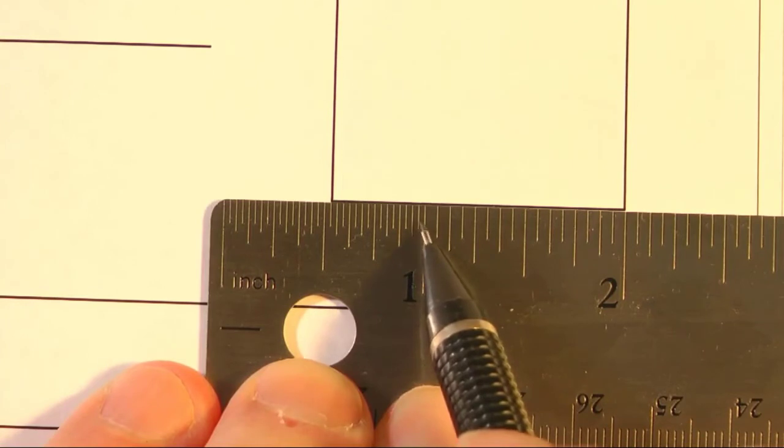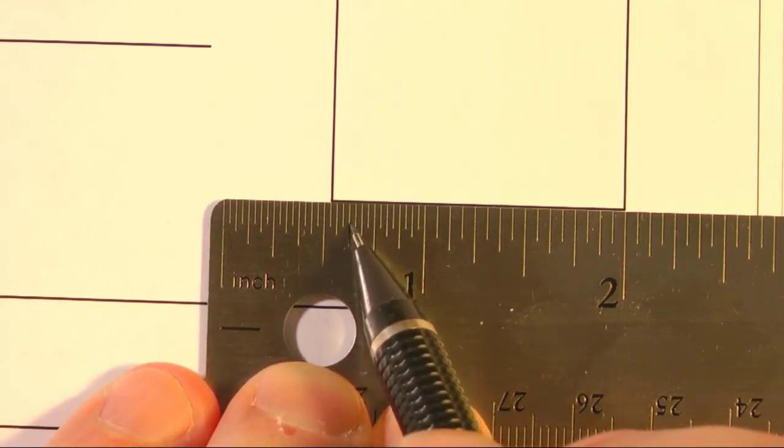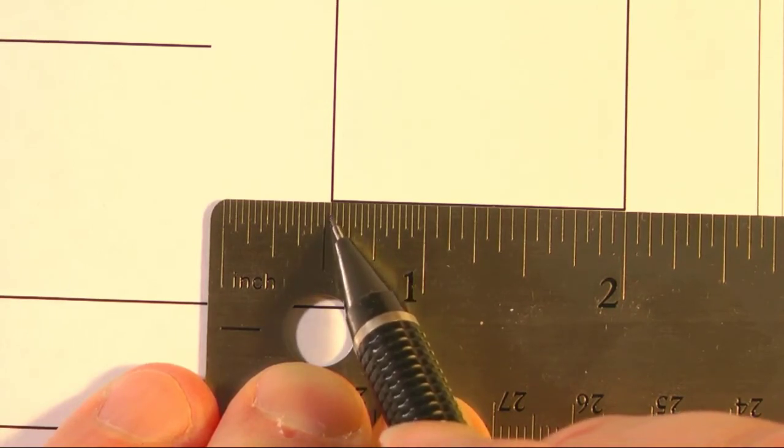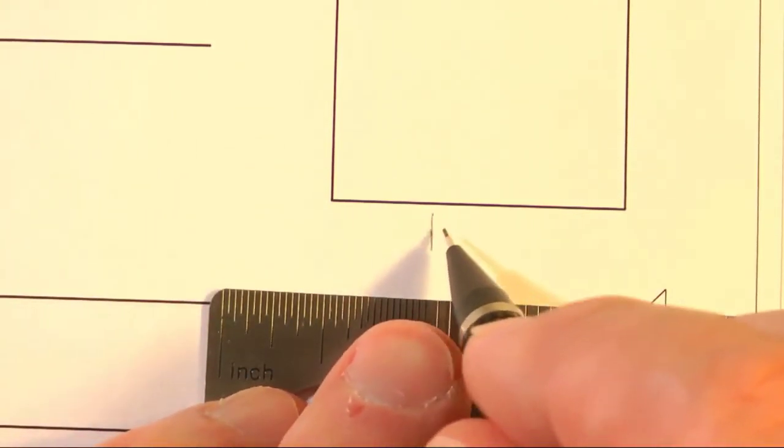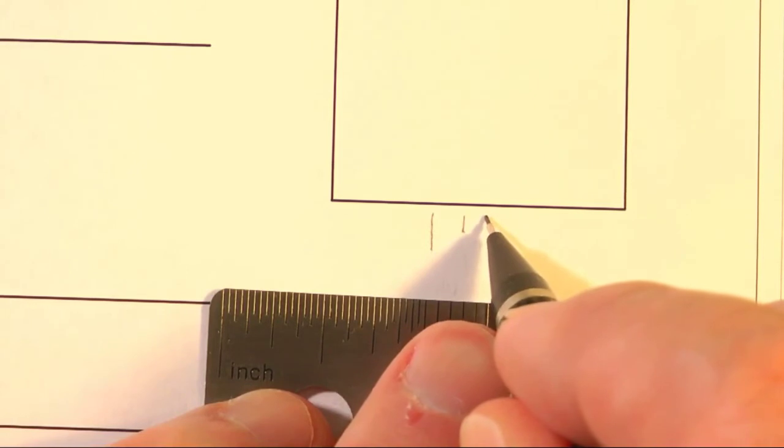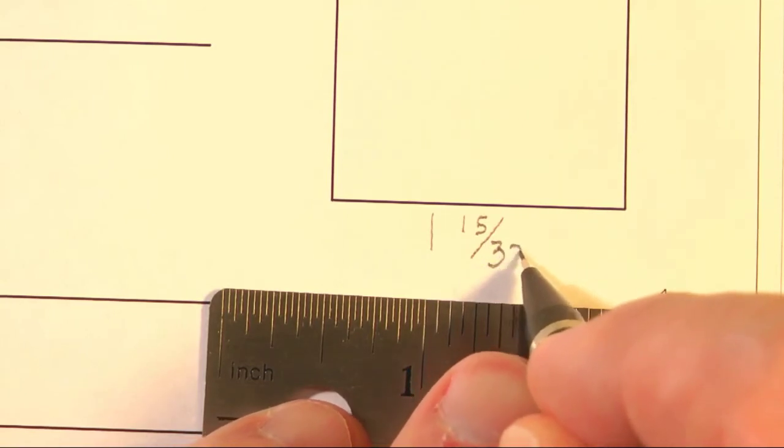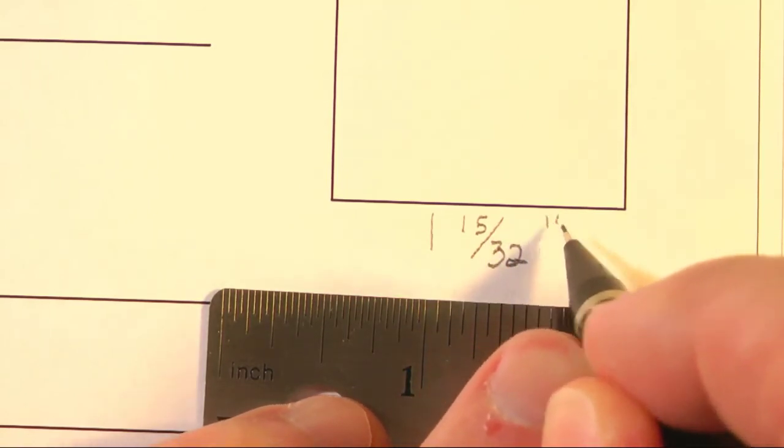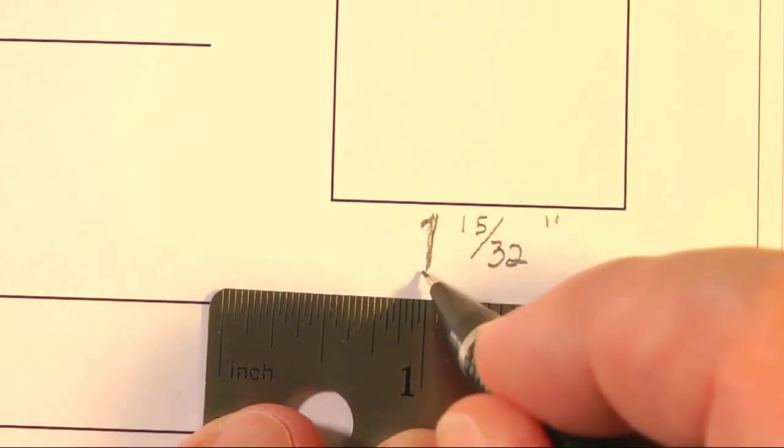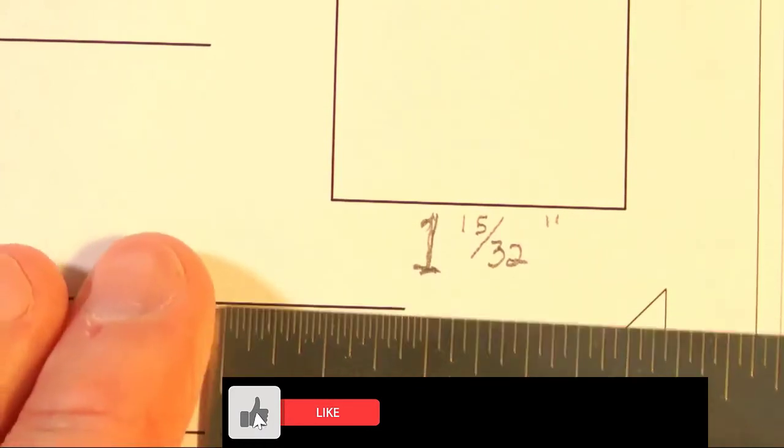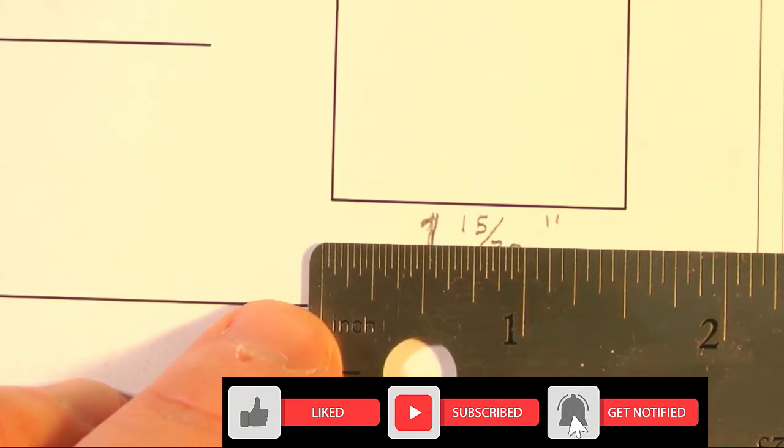So we have one, two, three, four, five, six, seven, eight, nine, ten, eleven, twelve, thirteen, fourteen, fifteen thirty-seconds. So that's one and fifteen thirty-seconds. Right here. So it's one and fifteen thirty-seconds inches. Right? And that's with these tiniest, tiniest lines here. And this is a pretty detailed ruler.